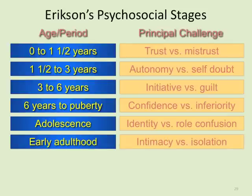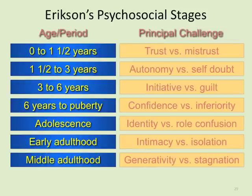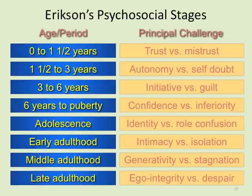Early adulthood is intimacy versus isolation: do I want a profound relationship where I give myself wholly to someone, or do I want to be young and single and pursue my own dreams? Middle adulthood is generativity versus stagnation — creating a family, looking back on your life, and pursuing more goals or being satisfied with what you've achieved.